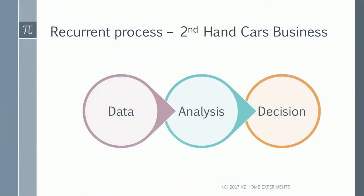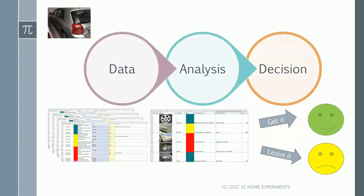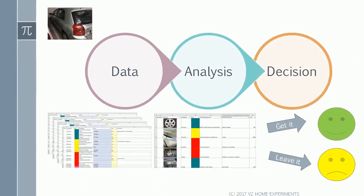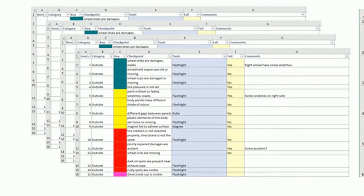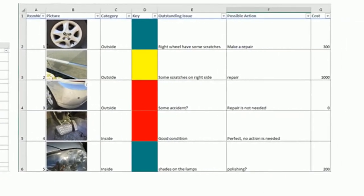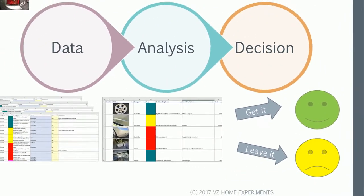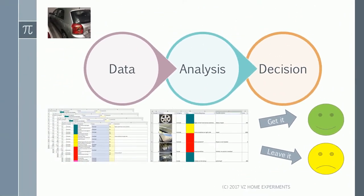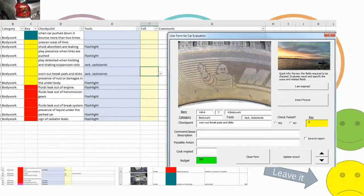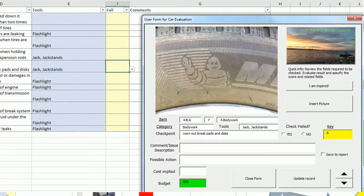We will look into the business process that reflects the situation of data collection, analysis and decision on the example of second-hand car business. Every car needs to be examined using a series of checklists. Then the report will be generated and the final decision is made. The process is very simple, but imagine how tedious it will become if repeated 20 or 50 checks. We will transform this boring process into a quick and fun exercise with user form.